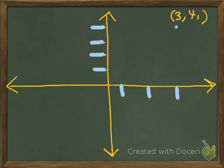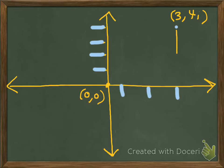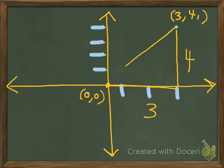Now, if you want to find the absolute value of this complex number — which is the distance from it to the origin at (0, 0) — you would use the Pythagorean theorem by finding the distance from the point to the real number axis, which would be 4, and then the distance from that part to the origin would be 3.